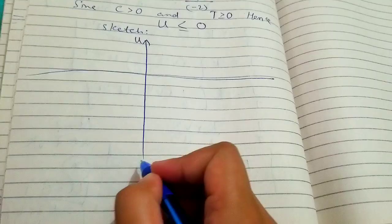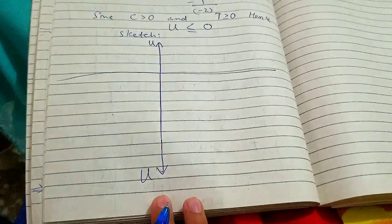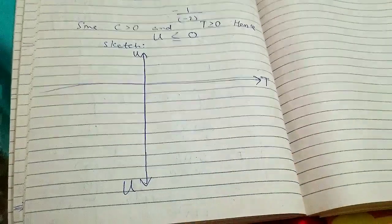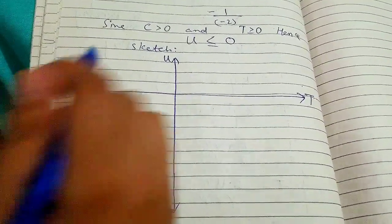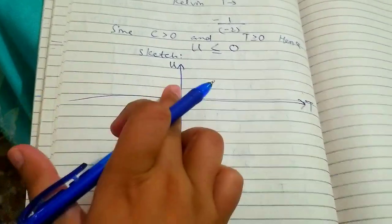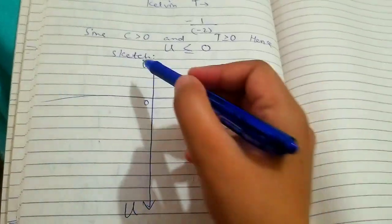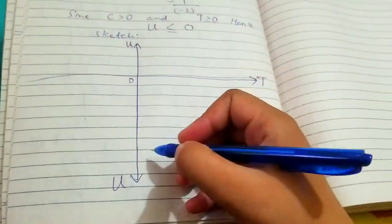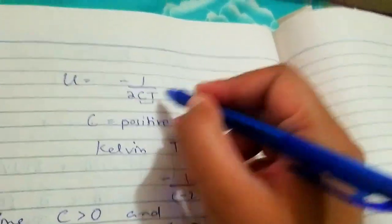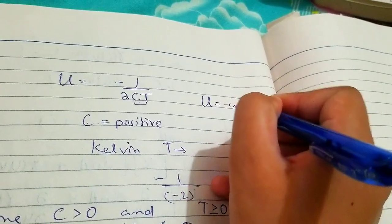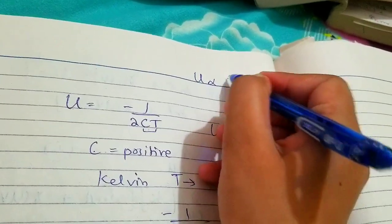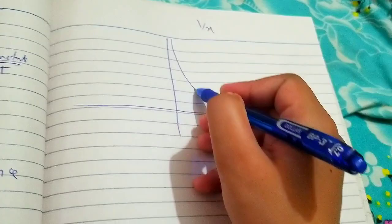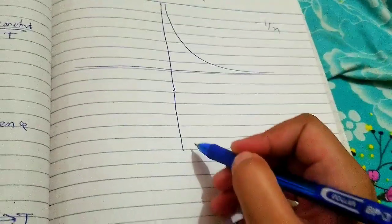On the vertical axis we have the negative y-axis, because U is negative all the time. The origin is here; positive temperature is to the right, and negative temperature doesn't exist, so that side doesn't contribute. Every value of T gives a negative U. The function U equals minus 1 over (2cT) is like a minus 1 over x graph.